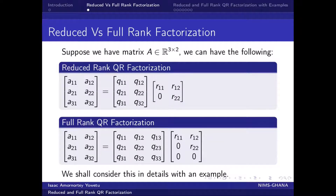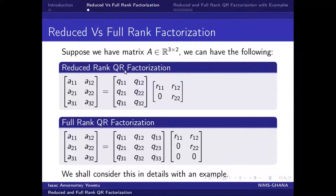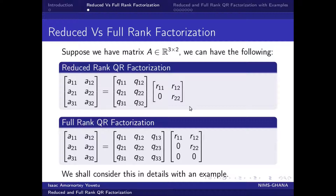So we want to understand the whole thing from this example. Suppose we have a matrix A belonging to our R space of 3 by 2. We can have the following reduced rank QR factorization. This is our 3 by 2 matrix. In our reduced rank, our Q matrix will also be 3 by 2, and our R matrix is going to be 2 by 2, of which the diagonals will be non-zero elements.